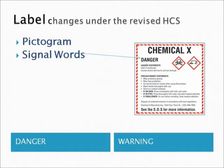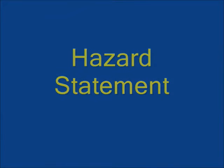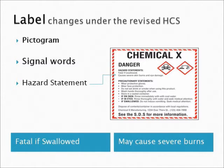Signal words: 'Danger' or 'Warning' will be used to emphasize hazards and indicate the relative level of severity of the hazard assigned to a hazard class and hazard category. Only one signal word corresponding to the class of the most severe hazard should be used on a label. Hazard statements tell what the health and physical hazards associated with the chemical are. For example, 'Fatal if swallowed.'